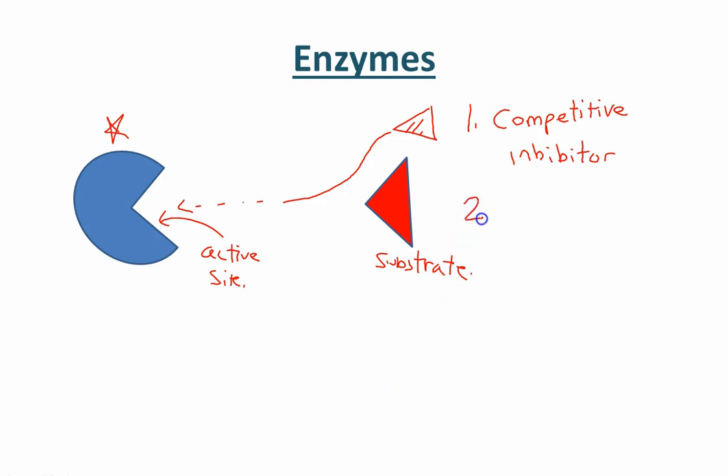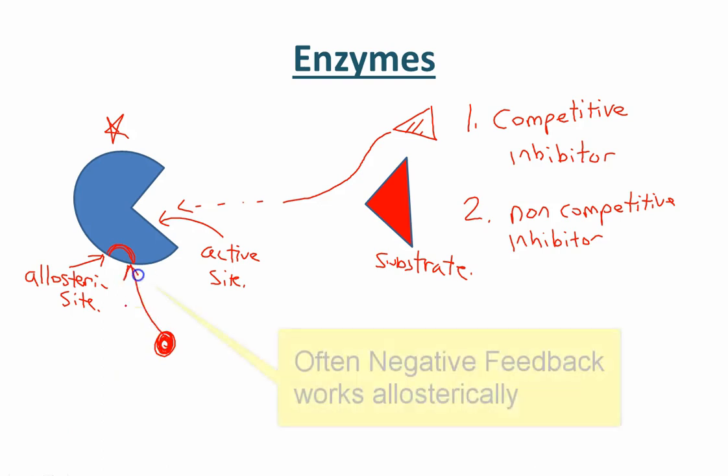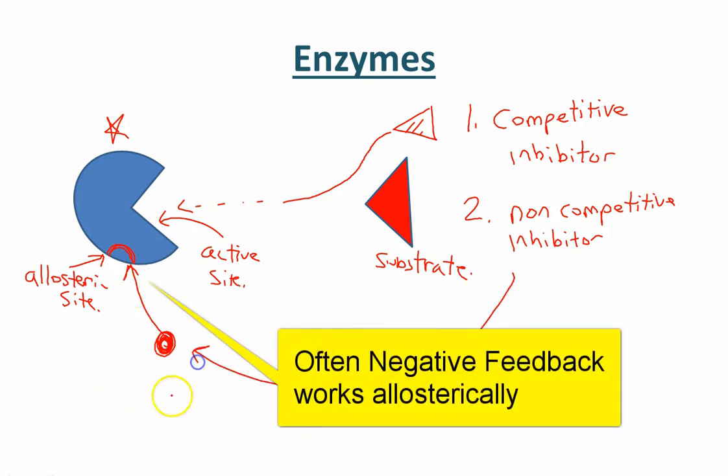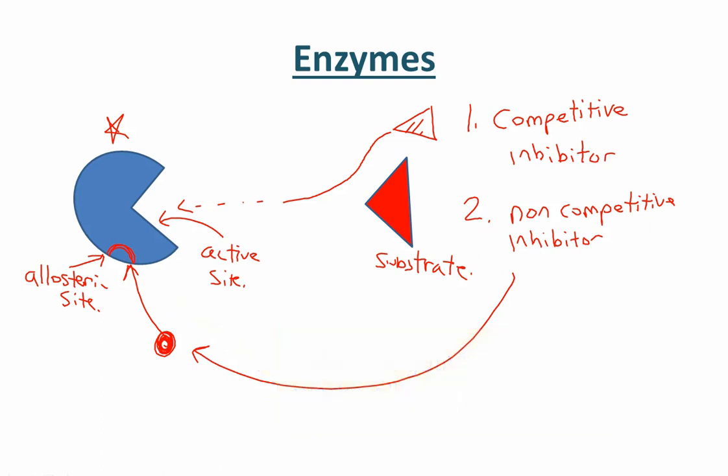Another type of inhibitor is going to be the non-competitive inhibitor which is actually going to find a site. The allosteric site is a binding site for something that is not going to fit into the active site. So, this right here is a non-competitive inhibitor. If this bonds to the allosteric site, it will actually change the shape of the enzyme, give it a different conformation, and therefore, the substrate literally does not fit into the active site. So, in the case of the non-competitive inhibitor, it doesn't matter how much substrate you add.